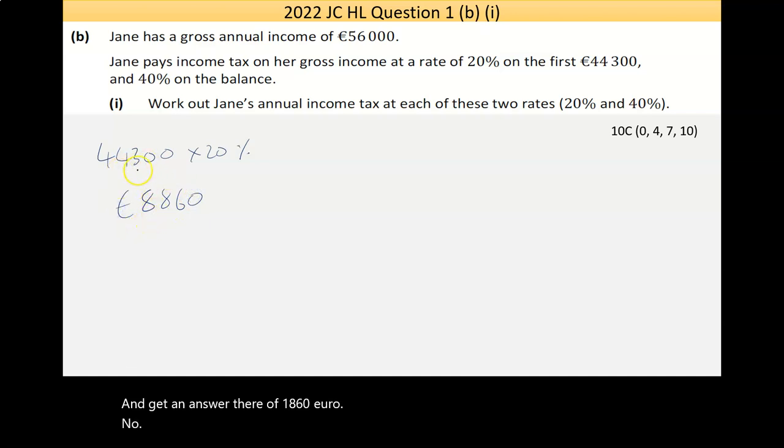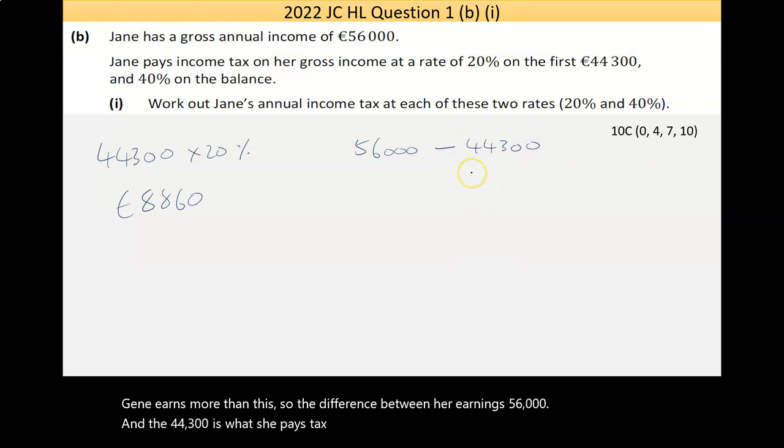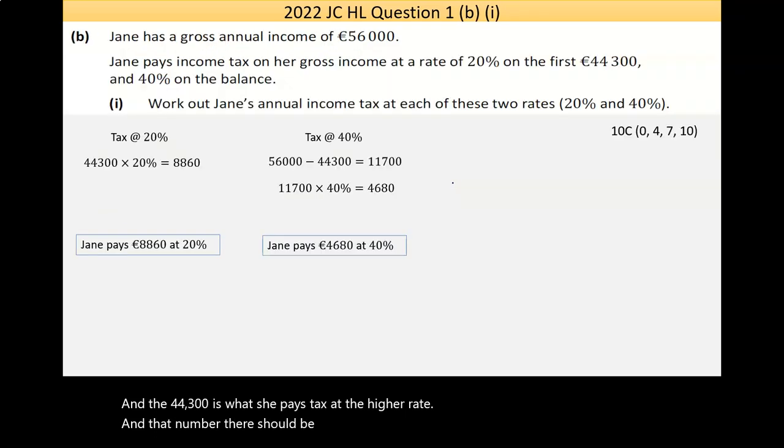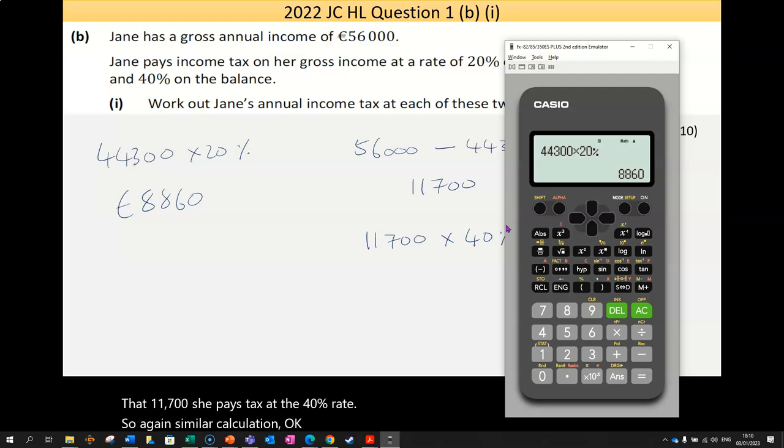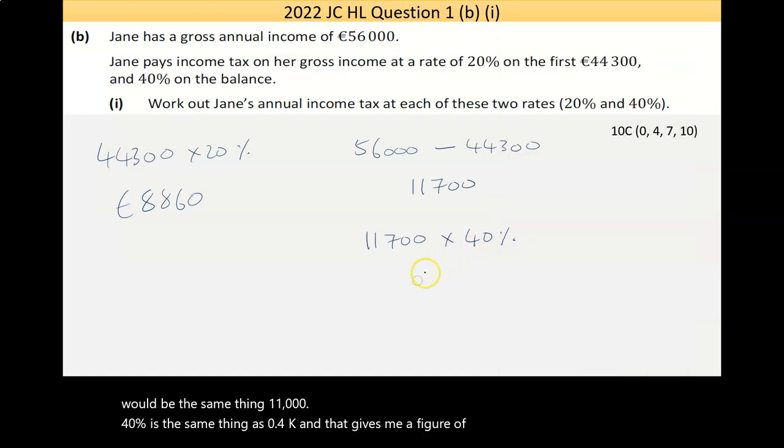Now Jane earns more than this. So the difference between her earnings, 56,000, and the 44,300, is what she pays tax at the higher rate. And that number there should be 11,700. Now that 11,700 she pays tax at the 40% rate. So again, similar calculation. This time I'm going to do it by 0.4, just to show that it would be the same thing. 40% is the same thing as 0.4. And that gives me a figure of 4680.